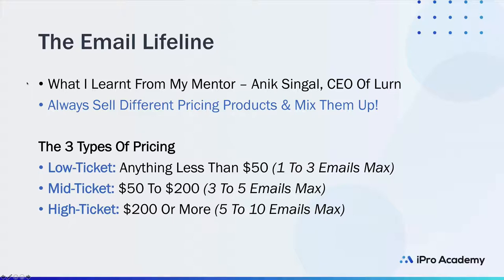For high-ticket offers above $200, you need to be more persuasive and persistent — send five to ten emails, especially if you're running a webinar. In the email lifeline, you've got to mix it up: send some low-ticket, then high-ticket, then a couple mid-ticket. You want to go low, mid, high, low-low, mid-mid, high. Don't just send the same price tier repeatedly — mix it around, and that's where your email lifeline really comes into play.